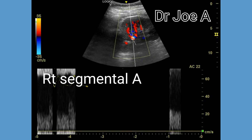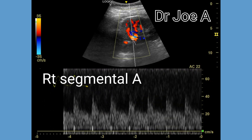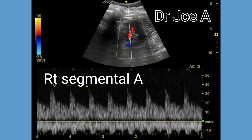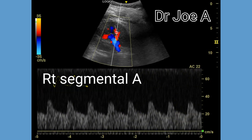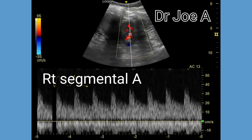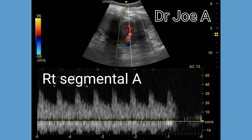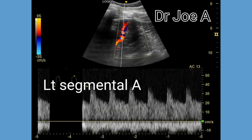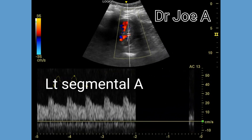Now we examine the segmental arteries, which are branches of the renal artery. The waveform of the segmental arteries typically shows just one peak, which is the systolic peak. The diastolic flow in the segmental arteries is usually low compared to the renal arteries. A higher resistance waveform in the segmental arteries could be an early sign of renal dysfunction or other renal pathologies. The left kidney also shows normal segmental arteries with a normal waveform.